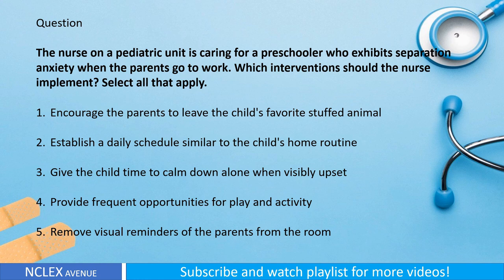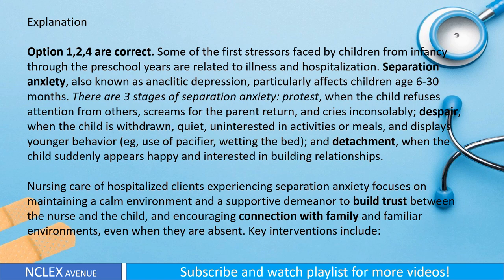Question: The nurse on a pediatric unit is caring for a preschooler who exhibits separation anxiety when the parents go to work. Which interventions should the nurse implement? Select all that apply. One: encourage the parents to leave the child's favorite stuffed animal. Two: establish a daily schedule similar to the child's home routine. Three: give the child time to calm down alone when visibly upset. Four: provide frequent opportunities for play and activity. Five: remove visual reminders of the parents from the room. Explanation: Options one, two, and four are correct.